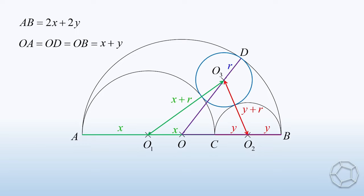In particular, we look at the side OD. Subtracting the radius of the in-circle, we have the length of OO3 is equal to X plus Y minus R.